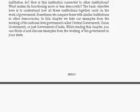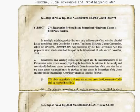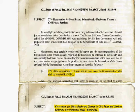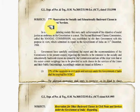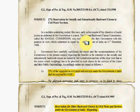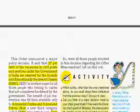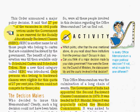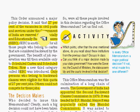In the beginning of the chapter, we have an official memorandum — an office memorandum — regarding 27% reservation for socially and educationally backward classes in civil posts or services. This is the format which created havoc in parliament as well as elsewhere. This order announced a major policy decision: that 27% of vacancies in civil posts and services under the Government of India are reserved for socially and educationally backward classes, now called the OBC category or Other Backward Classes category.